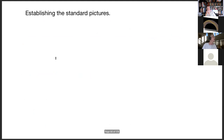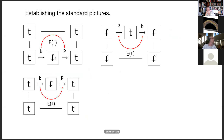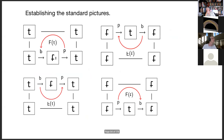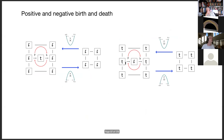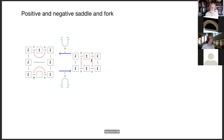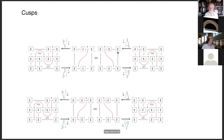Let me recall the standard pictures. We have capital F of T, upside-down F of T, capital F of F, and upside-down F of F. If you don't like the Fs, you can think of them as cups and caps with upward, downward, counterclockwise, or clockwise pointing arrows. The positive and negative births: you go from the identity on F to this composition, or from this composition to the identity F, and similarly for the identity on T. For forks and saddles, you start with this identity and go hither and yon. All the possible cusps are listed in a single slide here.